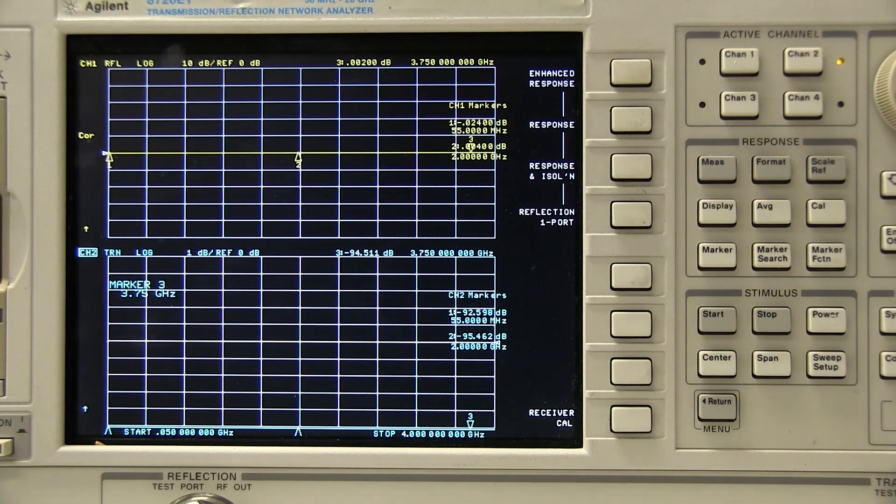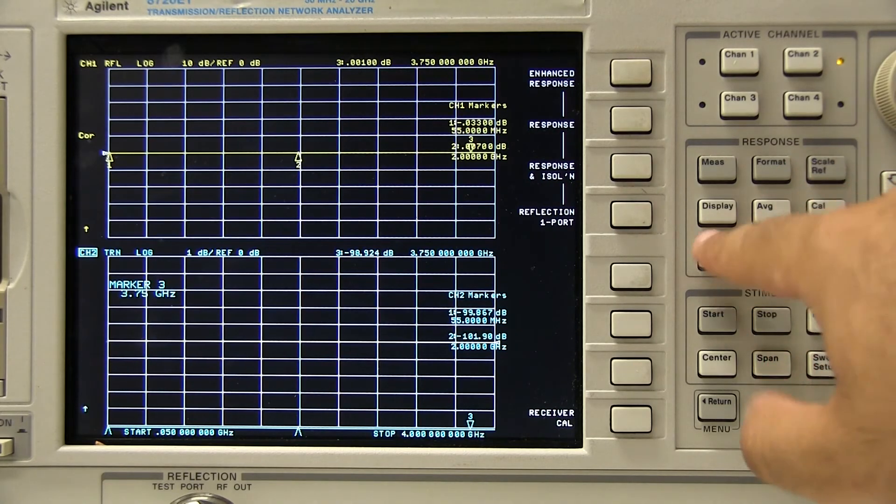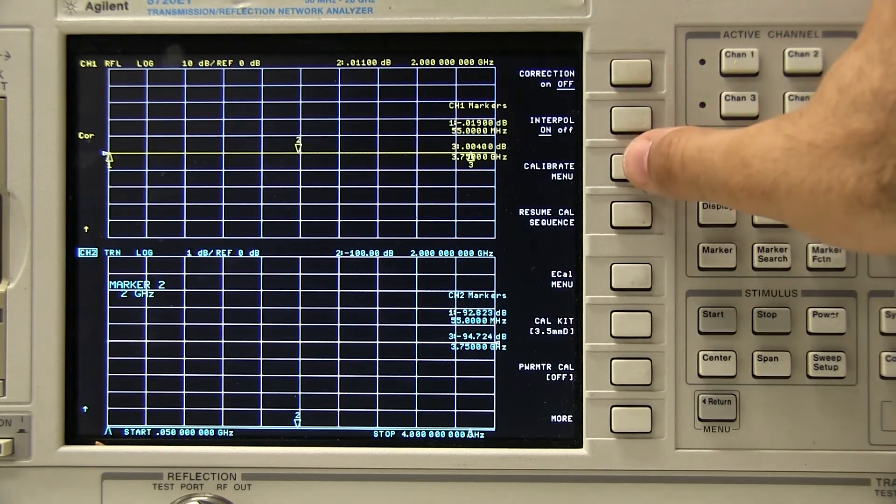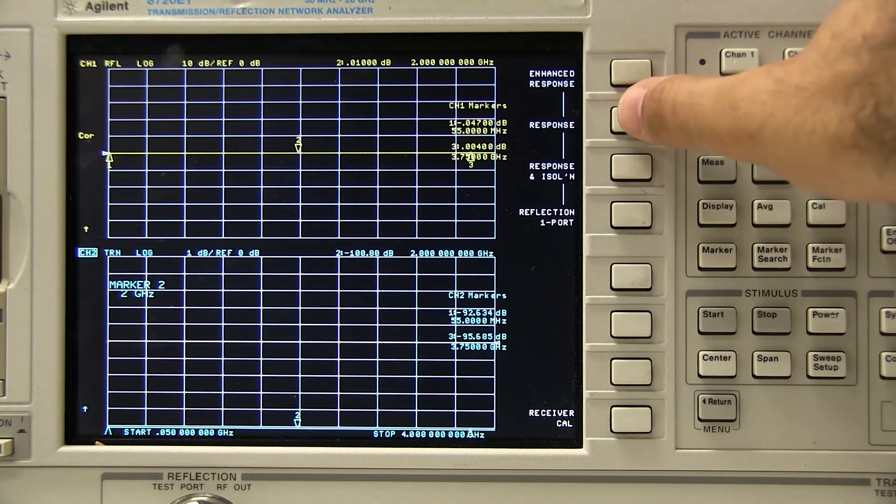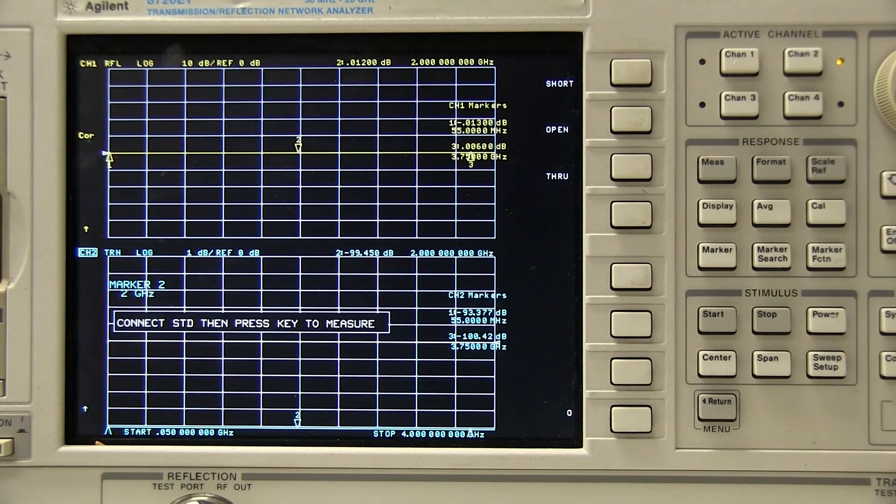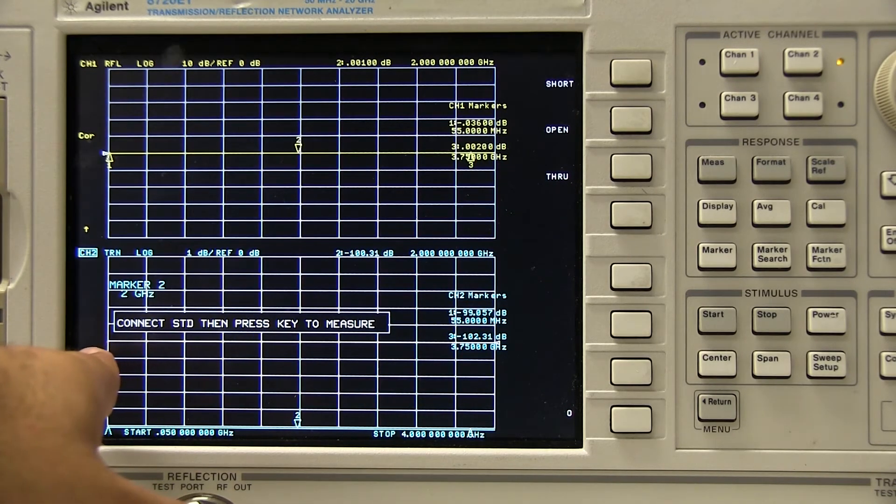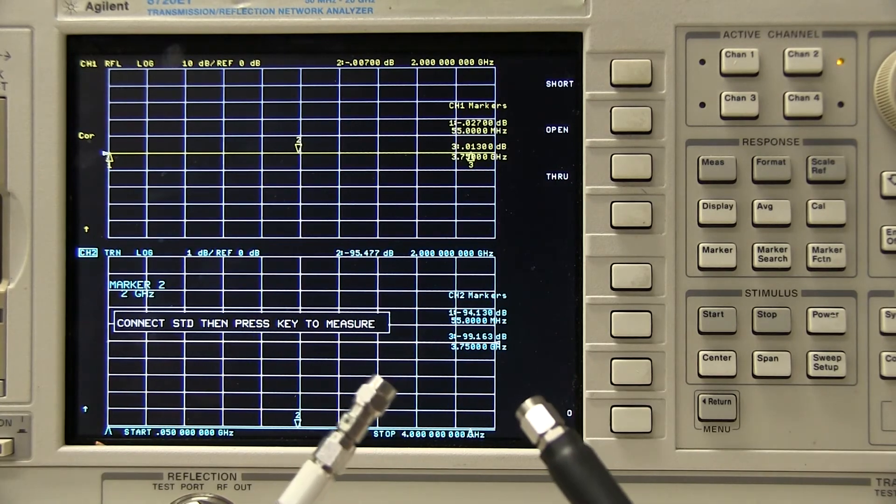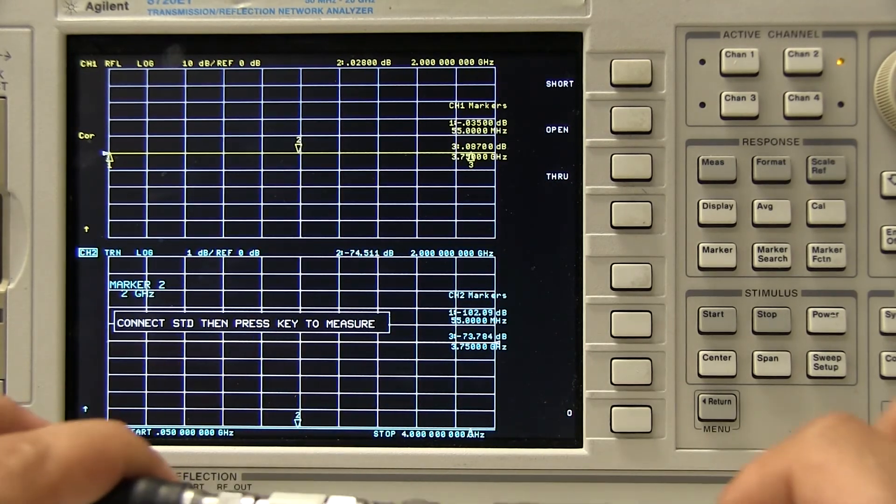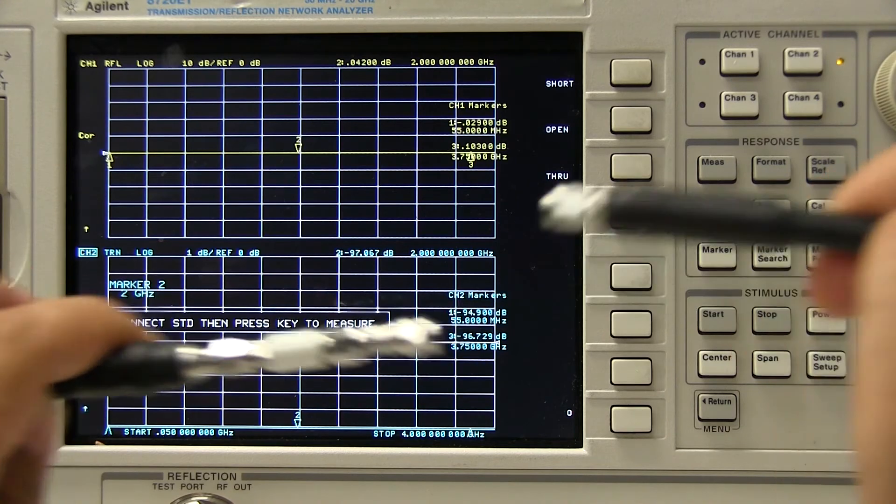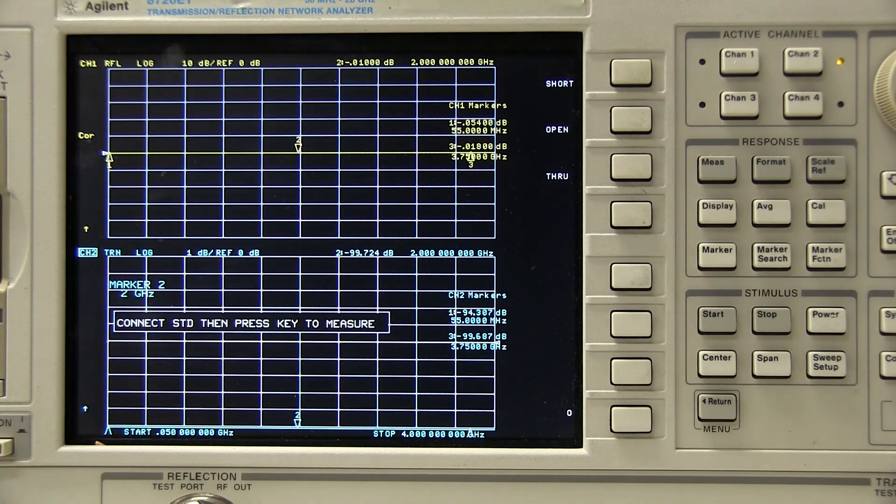Now to continue our calibration, we're going to switch to channel 2. And we're going to go to the calibrate cal menu again, and select response. What we're going to calibrate now is we're going to connect the input and output ports with the through. And it is going to send a stimulus from port 1 to port 2 and measure what a through looks like with respect to this test setup.